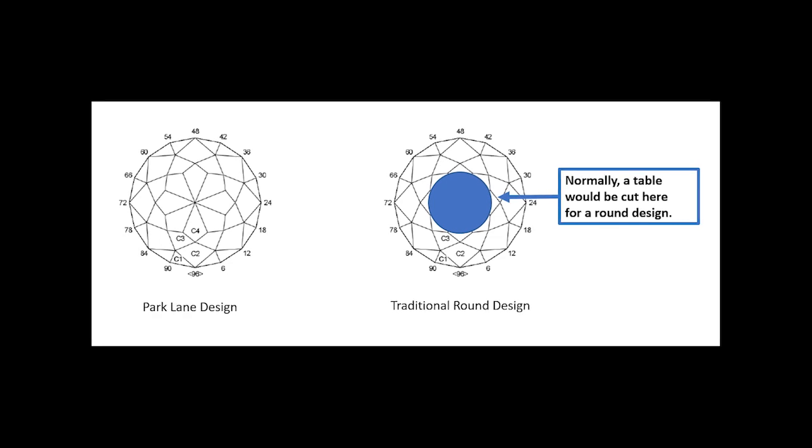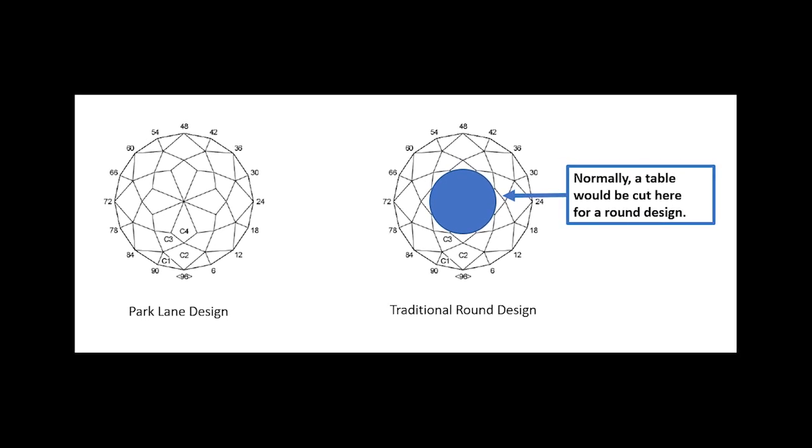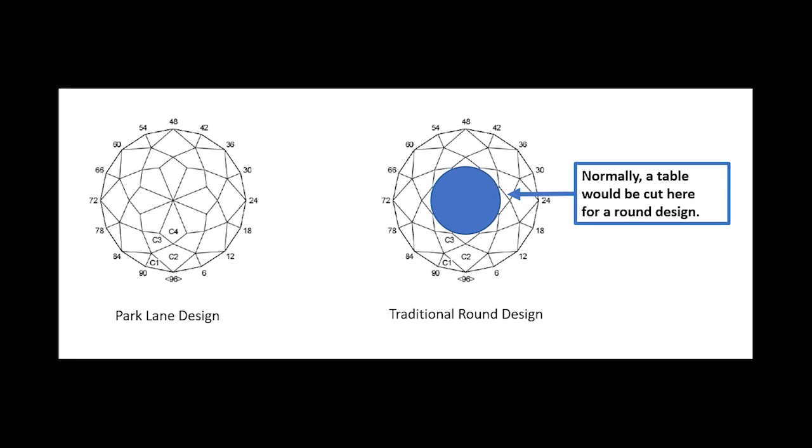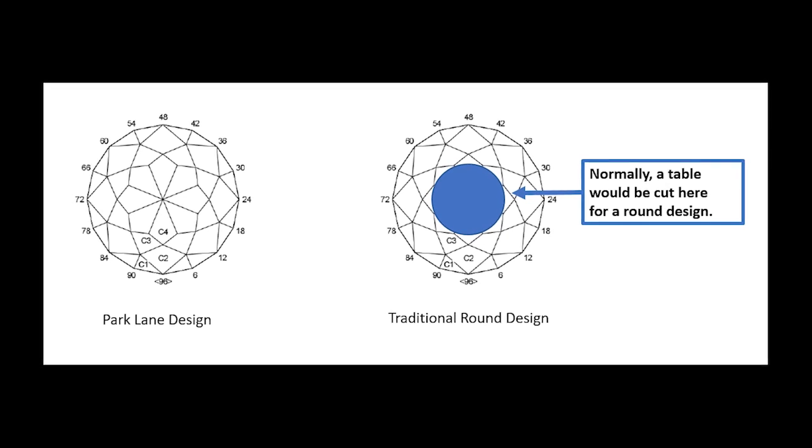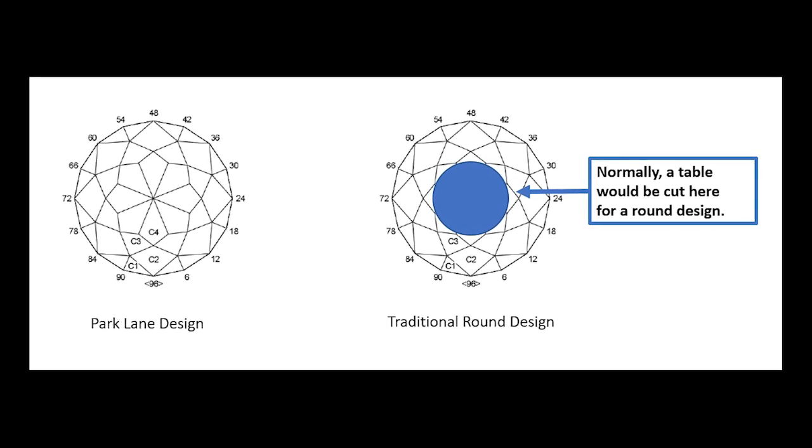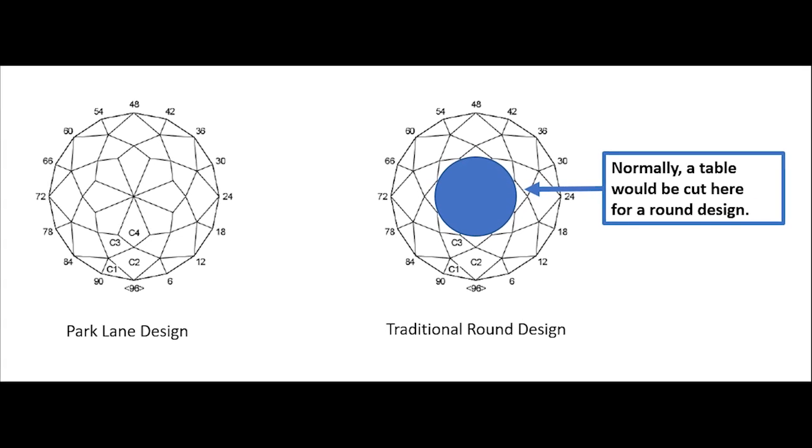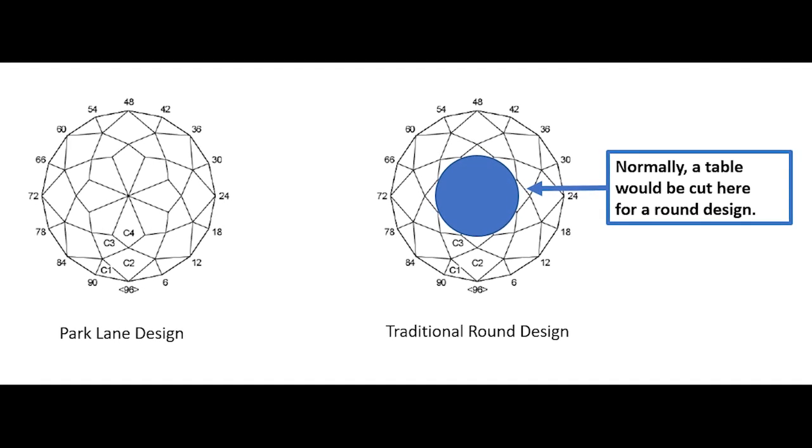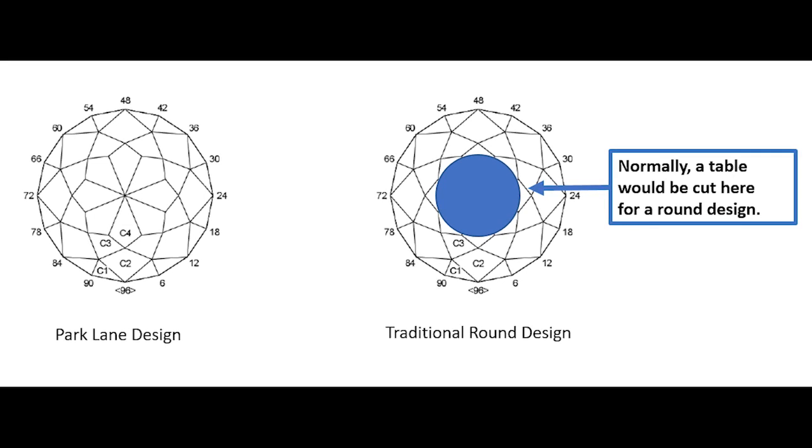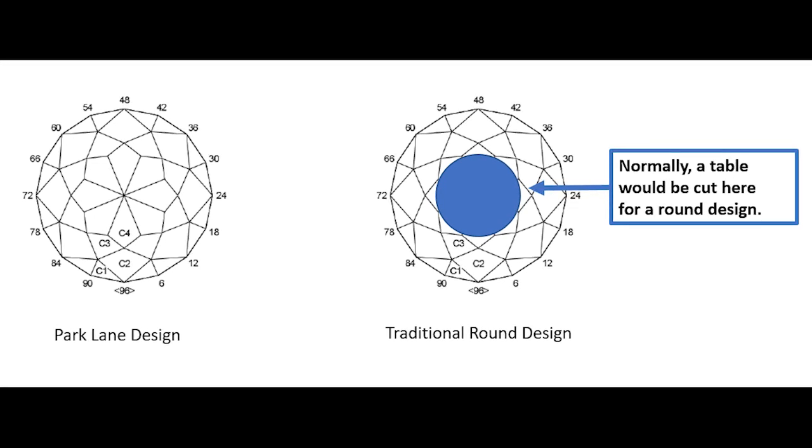The design is pretty much a standard round brilliant design with a twist. Kel didn't make a table, so the final row of facets meet at a center point on top of the gemstone. This is an unusual take on a standard round design, so I'm interested to see the effect of having no table and what the final gemstone will look like.